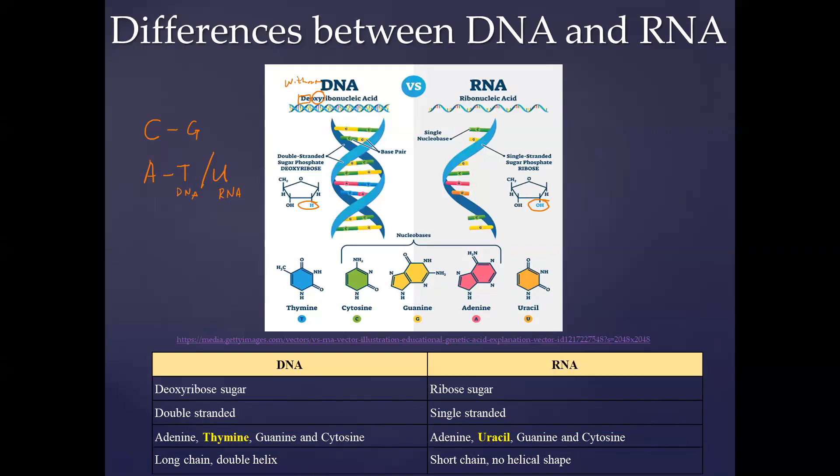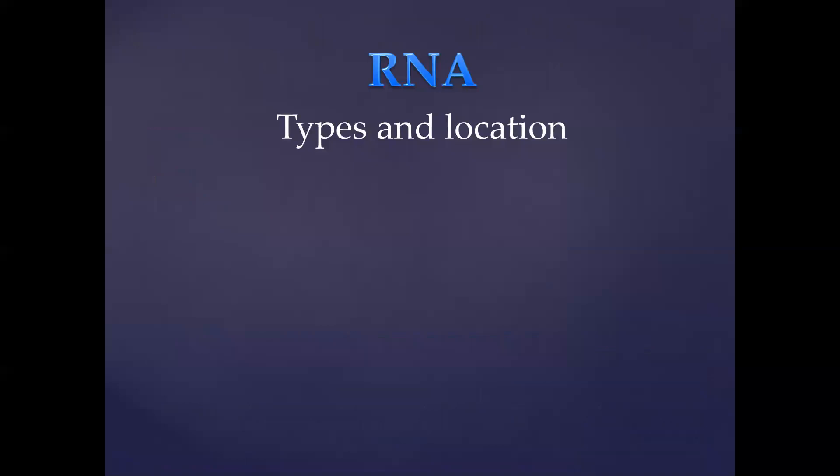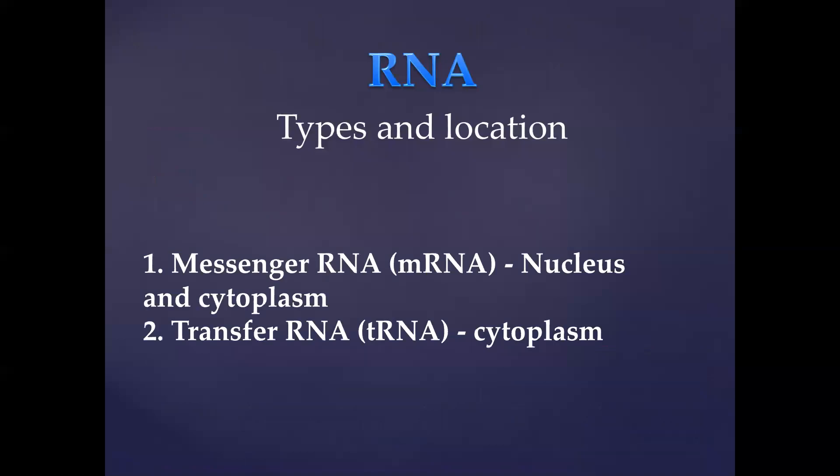The types and location of RNA: we get messenger RNA, or mRNA, and mRNA is found in the nucleus as well as in the cytoplasm. We also get transfer RNA, or tRNA, which is found in the cytoplasm. mRNA and tRNA are approved abbreviations. You are allowed to write it in this way, but note that the m and the t are small letters, and the RNA are all capitalized.